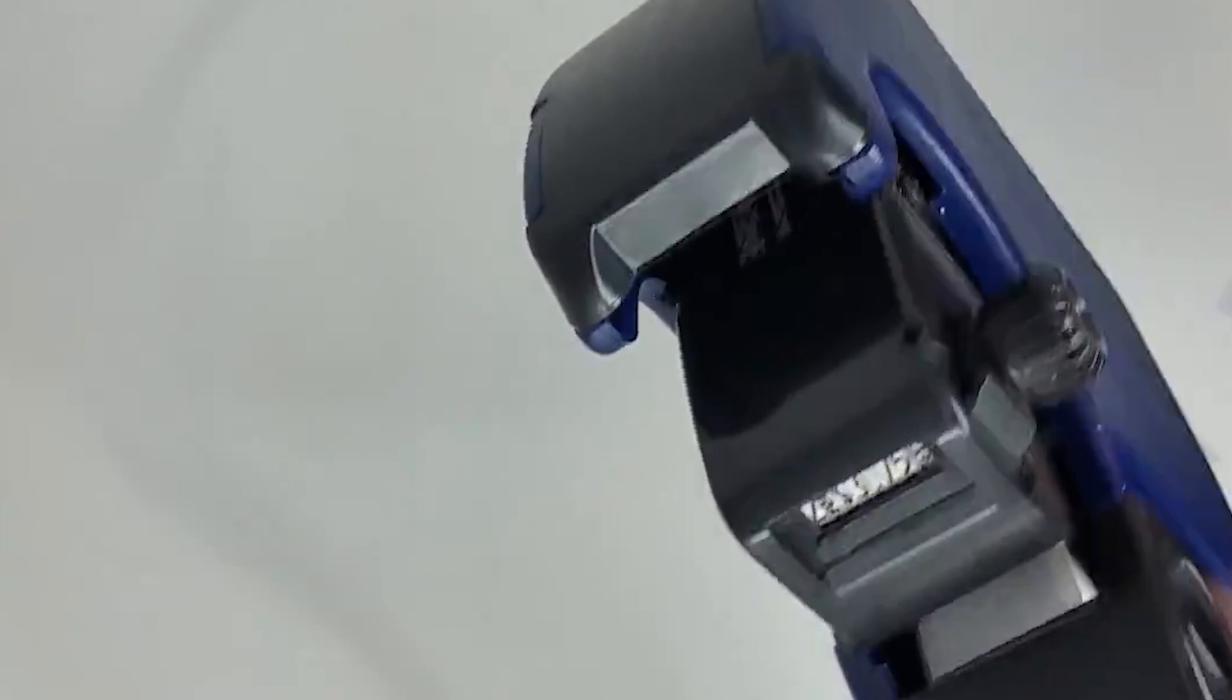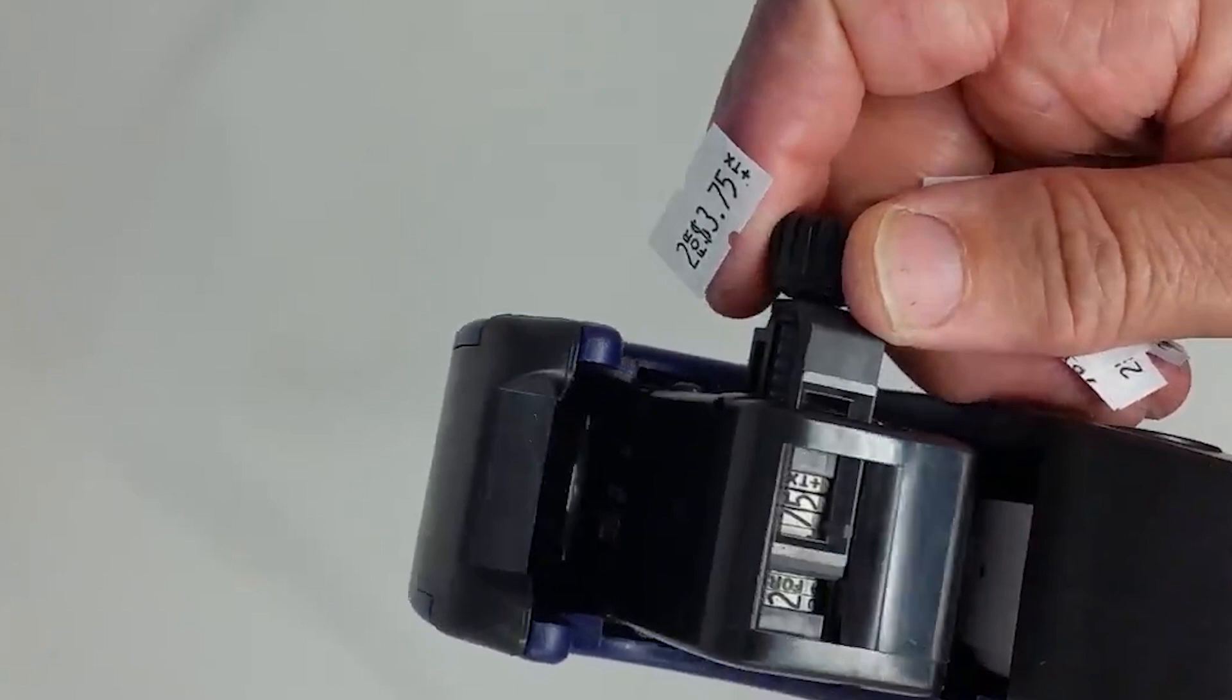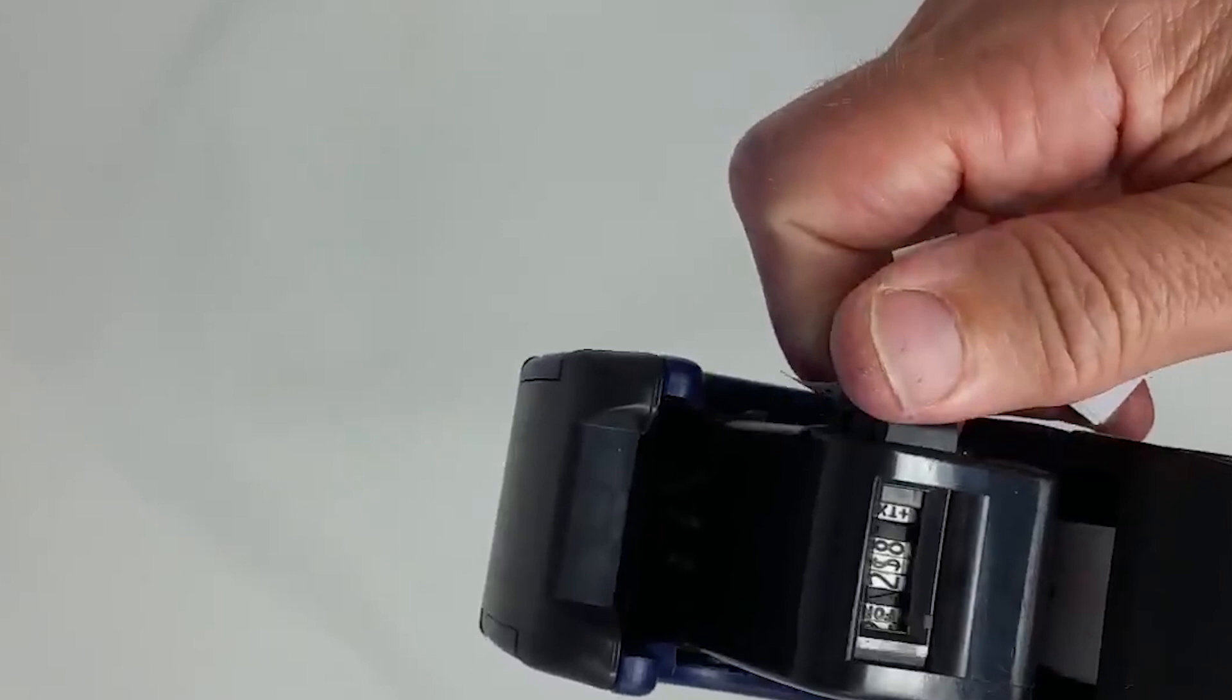To change the price, simply pull out the knob and turn until the character you wish to print is showing in the window. The band will only print when the white band is showing. When you've made your selection, make sure to push the knob back against the carriage of the gun, or it will not print.